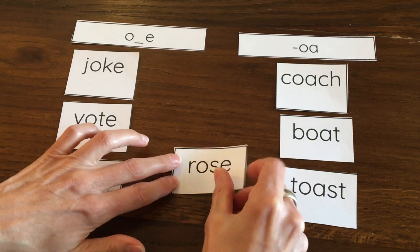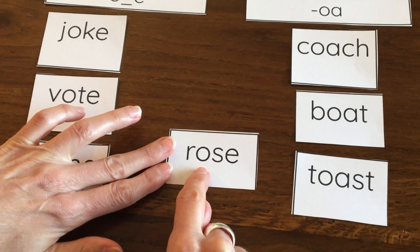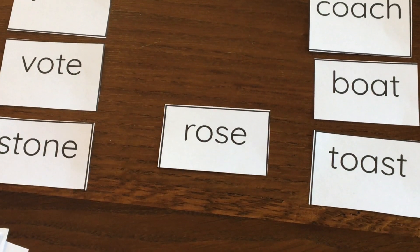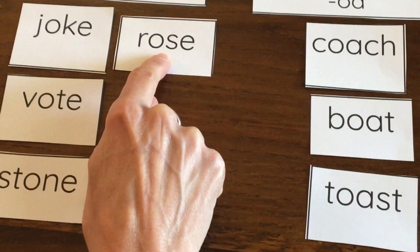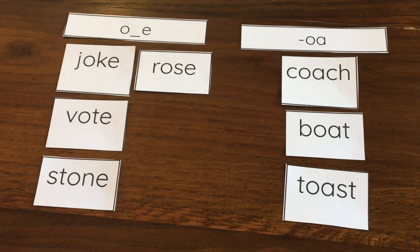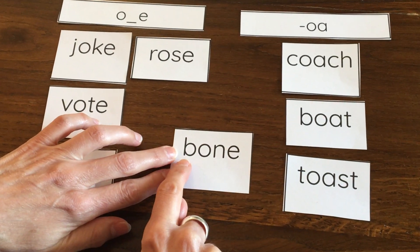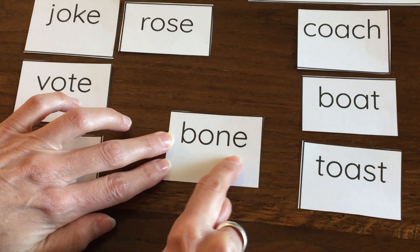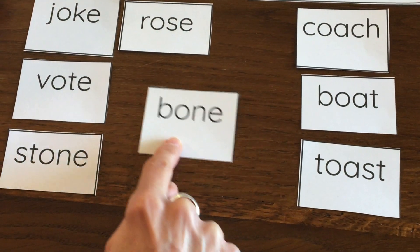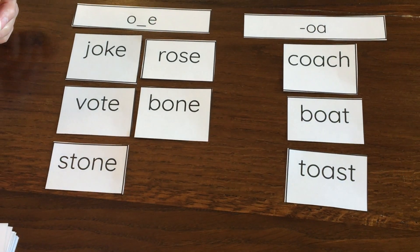Help me read. Rose. That's a flower. And there's that silent E at the end, so it belongs in that group. Keep helping me. Bone. We know that dogs like to chew on bones.